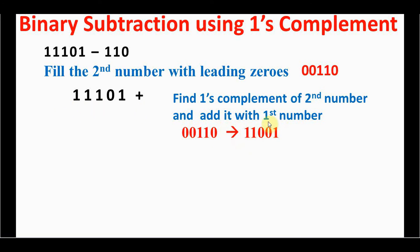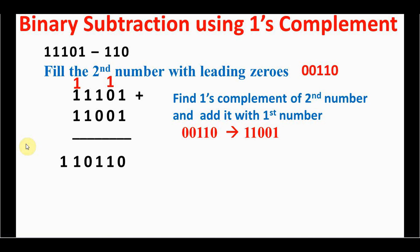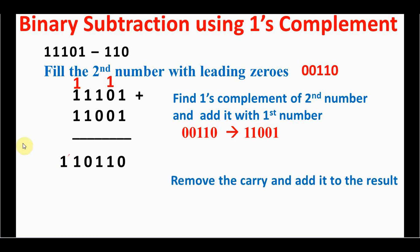Now add the first number with the one's complement of the second number using normal binary addition. Starting from the LSB: one plus one equals one-zero, zero placed and one carried; continuing, one plus one plus one gives double-one, producing an extra carry. This extra carry is called the end-around carry — remove it and add it back to the result. The final answer matches the one obtained by ordinary binary subtraction, confirming that one's complement is another valid method for binary subtraction.